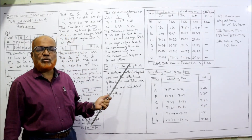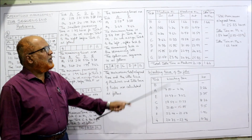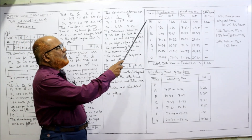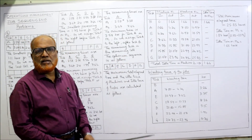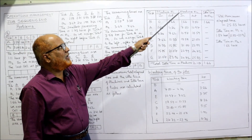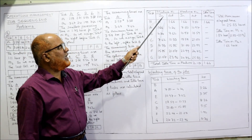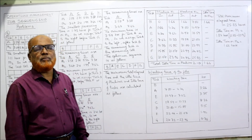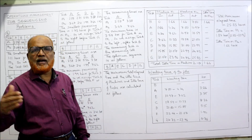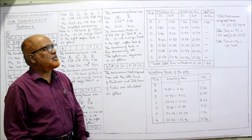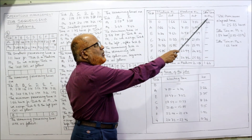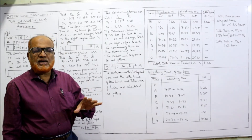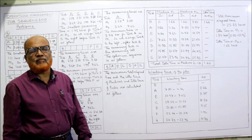We have found the optimum sequence. Now for the elapsed time table: columns are Task, then M1 (In/Out) and M2 (In/Out), where 'In' means starting time and 'Out' means finishing time. The last column is idle time on M2. There is no idle time column for M1 in between, since once M1 starts it does not stop.